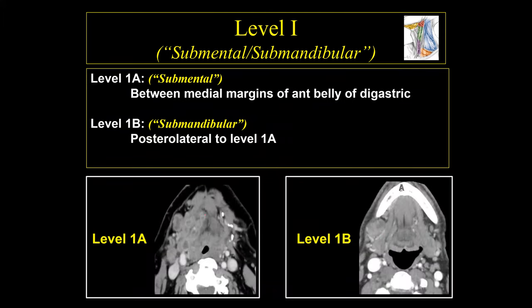Level 1 lymph nodes are divided into two groups. Level 1a is located between the anterior belly of the digastric muscles — these are the submental lymph nodes. Level 1b are located posterior and lateral to level 1a, lateral to the anterior belly of the digastric muscles.